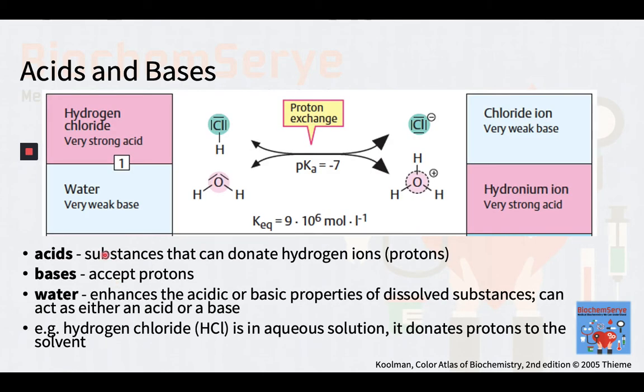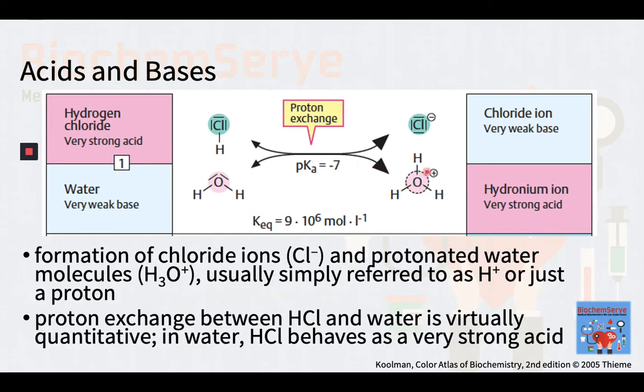In the same vein, most bases in biological systems just partially dissociate and thus are termed weak bases. In general, acids are defined as substances that can donate hydrogen ions or simply stated, protons. On the other hand, bases are compounds that accept protons. With this in view, water enhances the acidic or basic properties of dissolved substances. As such, water itself can act as either an acid or as a base. For example, when hydrogen chloride HCl is in aqueous solution, it donates protons to the solvent, resulting in the formation of chloride ions and protonated water molecules or hydronium ions H3O+, usually referred to as H+ ion or simply a proton.